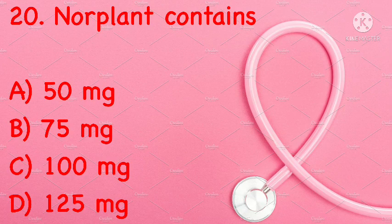Norplant contains: 50 mg, 75 mg, 100 mg, or 125 mg of levonorgestrel. Correct answer is B: 75 mg.